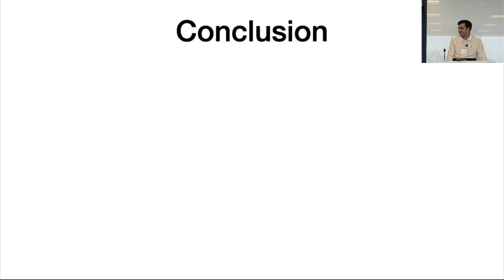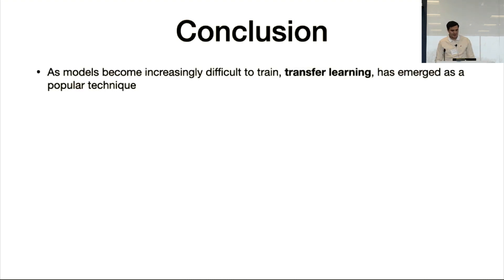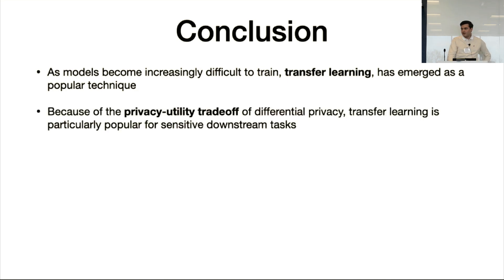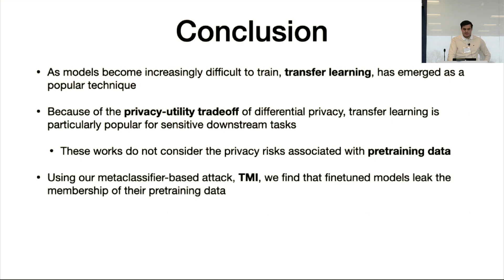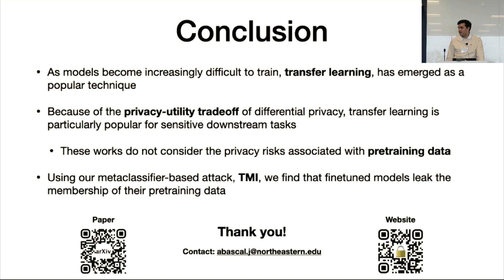Even with a very low epsilon value like 0.5, our attack completely clears the upper bound for membership inference success from the hypothesis testing characterization. In summary, as models become increasingly difficult to train, transfer learning has emerged as a popular technique, particularly for differential privacy due to the privacy-utility trade-off. The problem is existing works don't consider privacy risks associated with pre-training data. Using our attack, we find that fine-tuned models — whether or not DP is used — leak membership of pre-training data.